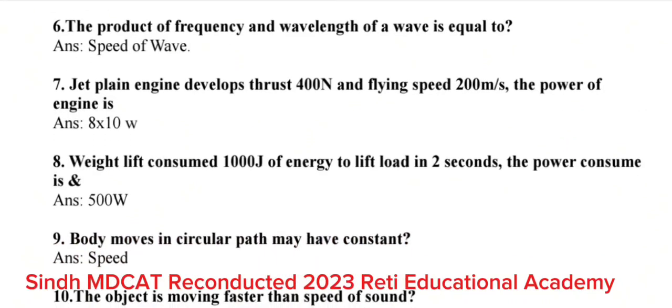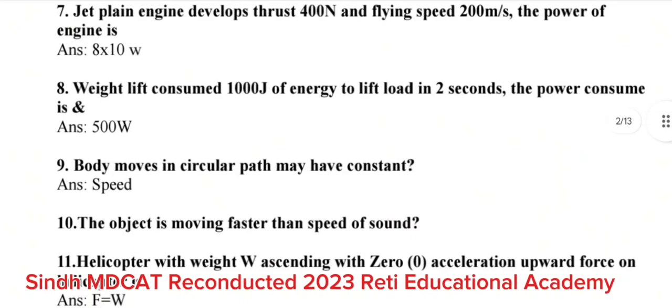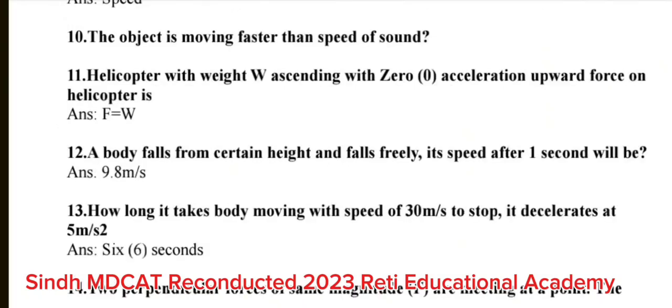Question number 8: Weight lift consumed 1000 J of energy to lift load in 2 seconds. The power consumes is? The correct answer is 500 watt. Question number 9: Body moves in circular path may have constant. The correct answer is speed. Question number 10: The project is moving faster than speed of sound. Write it in the comment.